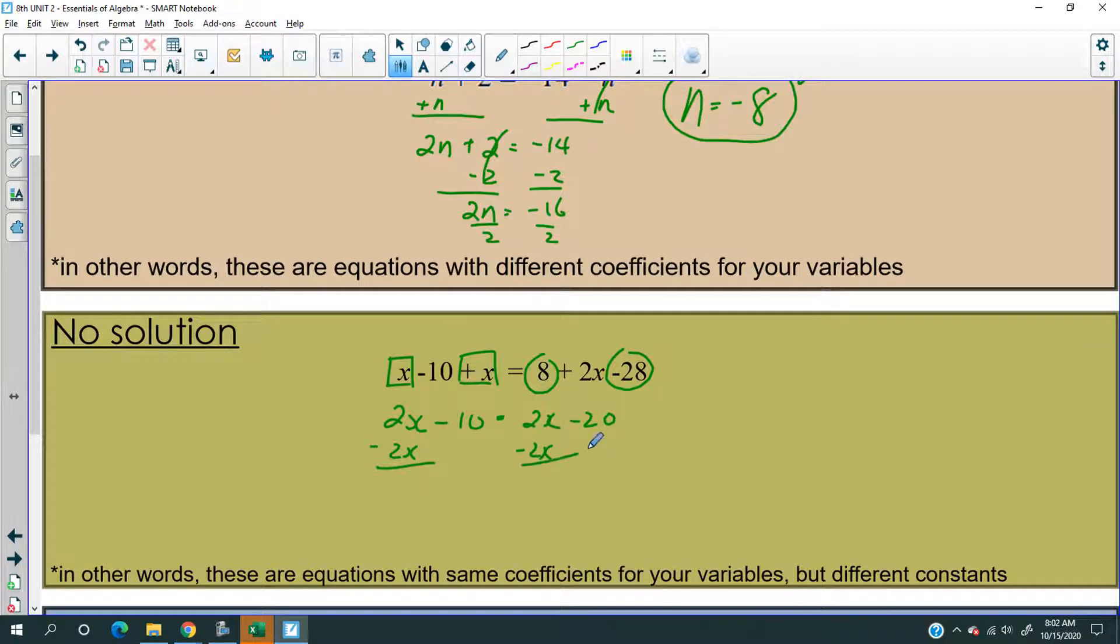Now, you can add 10 on both sides, but I'll show you, it doesn't really change anything. So that cancels out, I'm left with negative 10. That cancels out, I'm left with 20, negative 20. But hold on, wait, what?